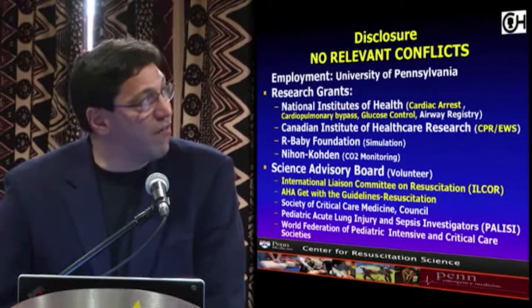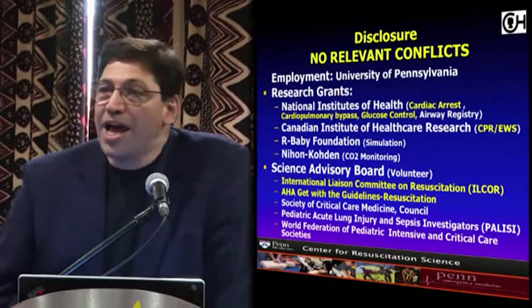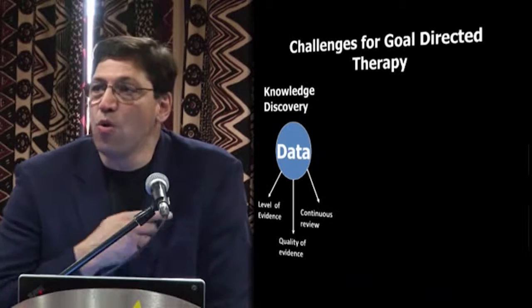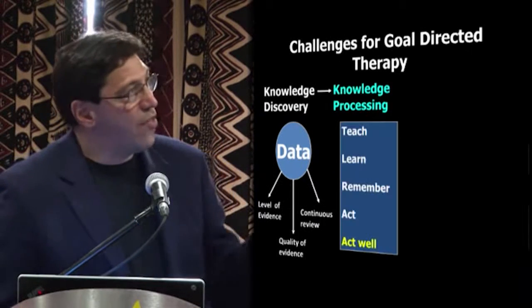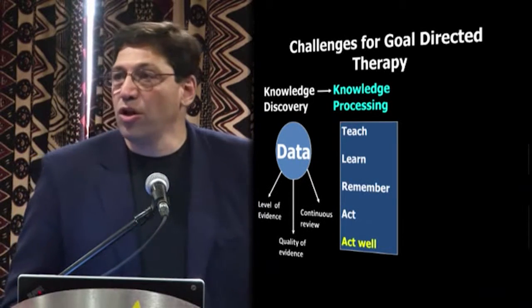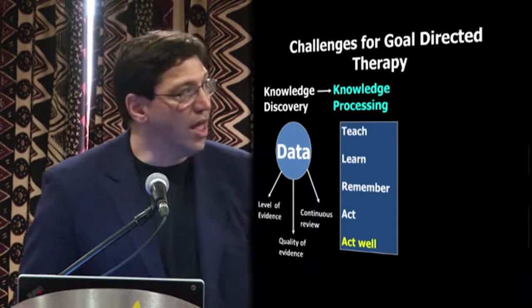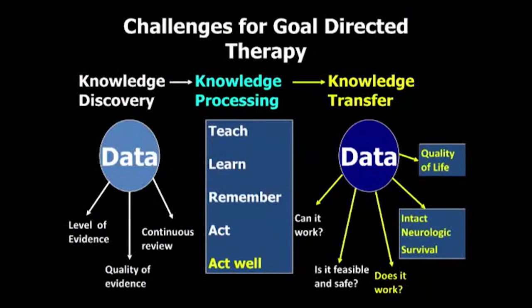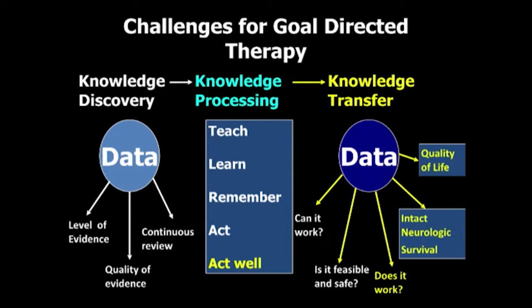I have no relevant conflicts. There are really goal-directed therapies that depend on the patient, what we know, and how that gets processed, taught, learned, remembered, and done well. How that impacts how we measure outcomes — particularly intact neurologic survival and quality of life, and how we get them back to their usual function. We've heard about how protocols help, but where and how should they work?